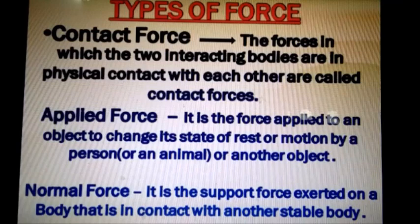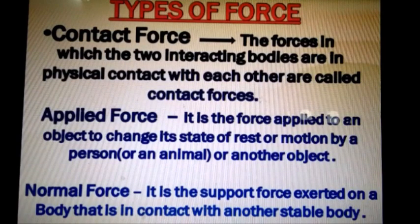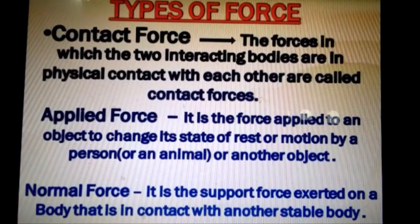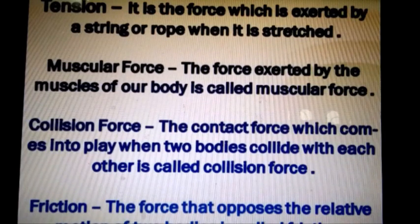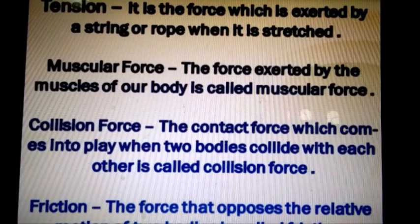The next type of contact force is normal force. Normal force is the support force exerted on a body that is in contact with another stable body. For example, if a glass of water is kept on a table, the table exerts an upward force on the glass to support its weight. The next type is tension — the force exerted by a string or rope when it is stretched. The stretched string exerts force in the direction opposite to the applied force. For example, when we pull a cart with a rope, this is an example of tension.